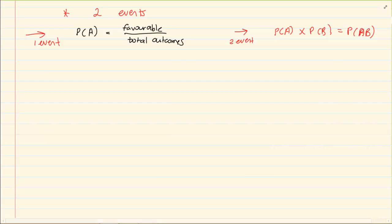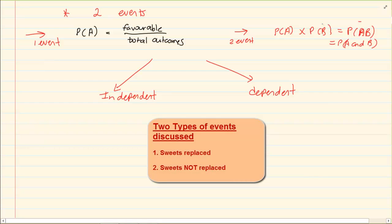Now instead of P of AB, what we call it is P of A and B. Why? Because event A is happening and event B is happening. The probability is not based on one event. Both things must happen for it to be complete. Now what happens further than that? Now you get an event that is independent and an event that is dependent. Now how do you decide? Is my event independent or is my event dependent? How do I know?